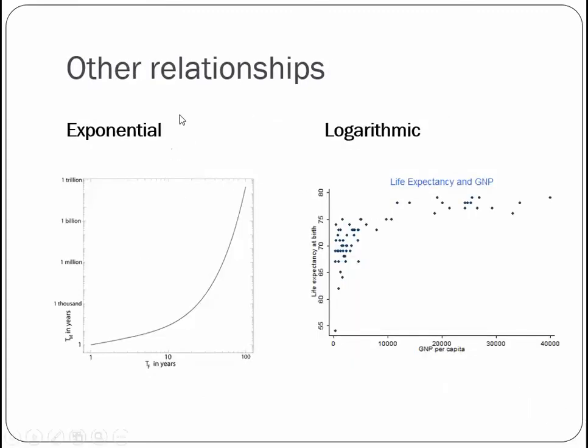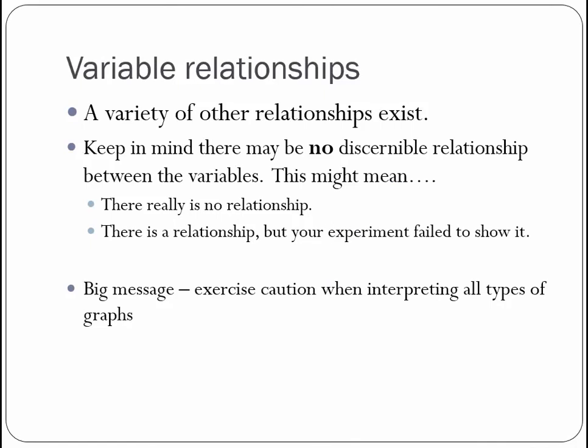Some other relationships that you could have is exponential, like population growth, oftentimes. Human population growth, for sure, is exponential. So it increases like that. You could have a logarithmic, where something goes up and then it tends to level off. That's a logarithmic type relationship. And there's lots of others. There's other relationships, but keep in mind, especially if you're just doing an experiment, your variables might not be related. Or when you graph them, you might not be able to discern or figure out a relationship. So that could basically mean two things. It could mean there really isn't a relationship between your variables. They're just totally unrelated. They don't have anything to do with each other. Or they might have a relationship, but your experiment failed to show it for whatever reason. Experimental error, etc.